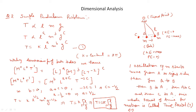Comparing powers of both sides: B = 0. Then A + C = 0. For T: on the left the power is 1, on the right it is −2C, so −2C = 1, giving C = −1/2. Substituting into A + C = 0 gives A = 1/2. B is already found to be 0. Now we put all values of A, B, and C into equation 1.